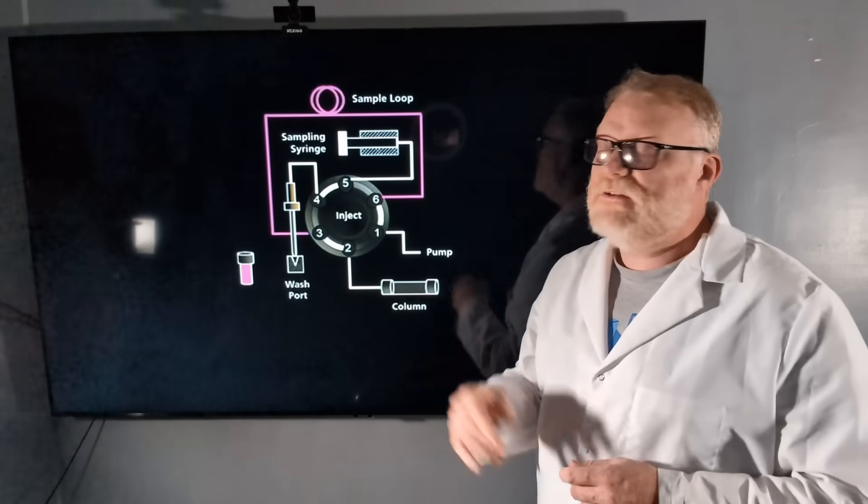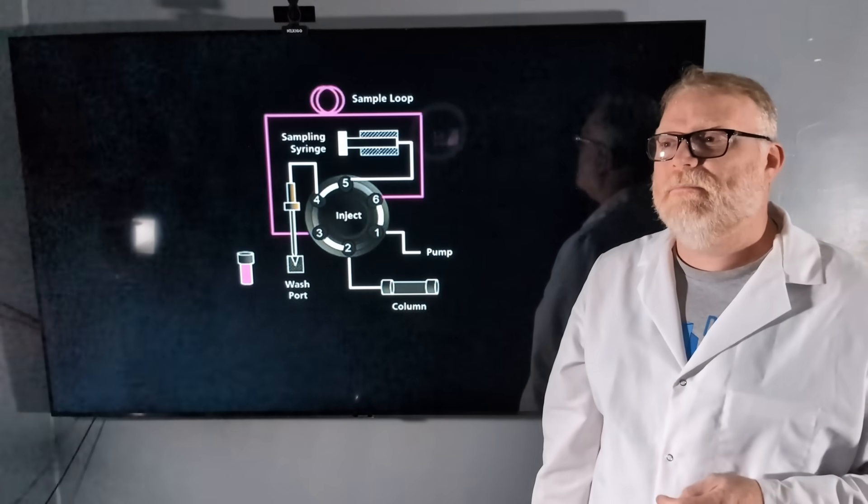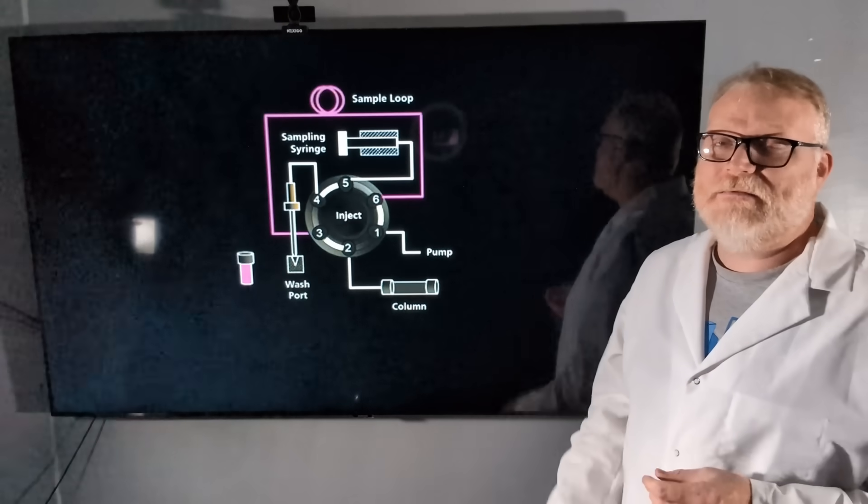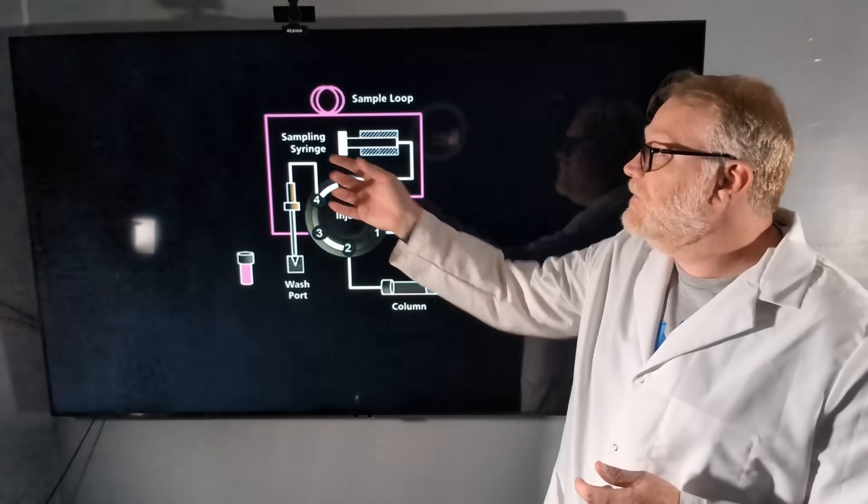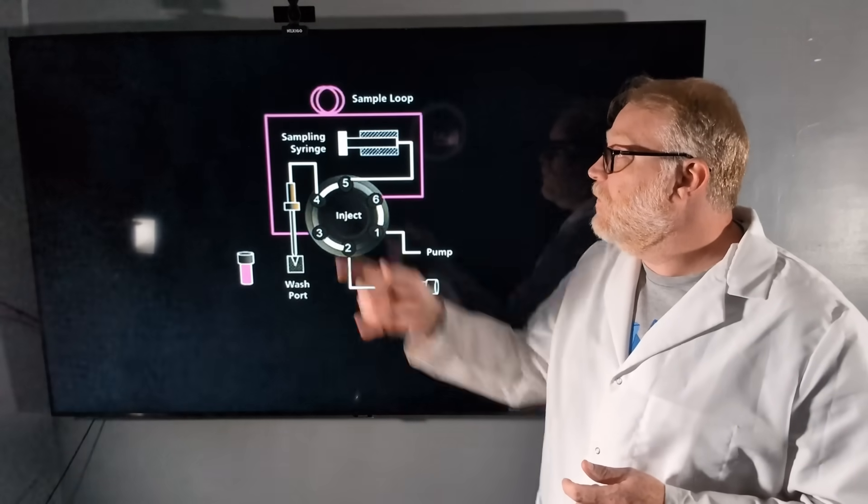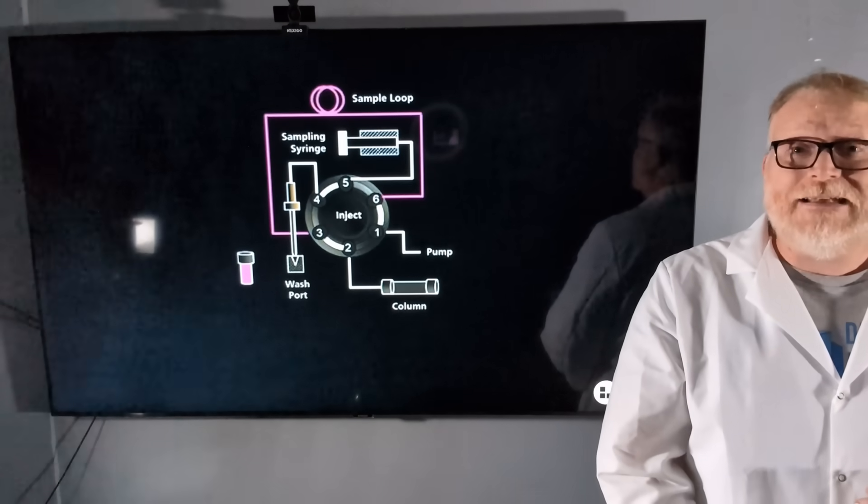The needle then moves to a wash port or a wash vial, depending on what type of manufacturer has installed. And then the sampling syringe is going to be used to wash out that sample needle.